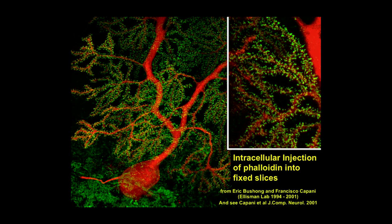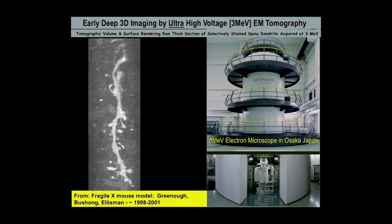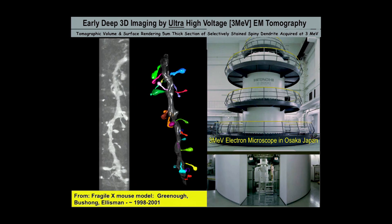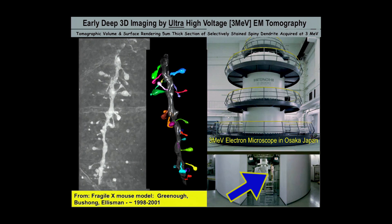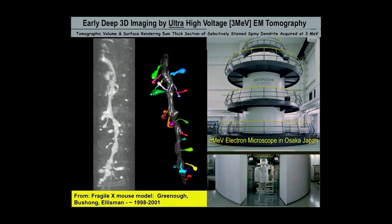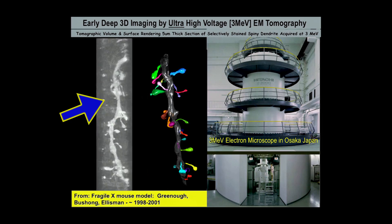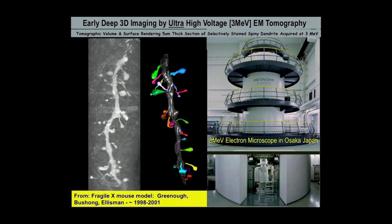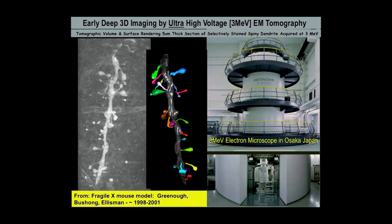These are all dendritic spines marked by actin in a confocal microscope. This is a Purkinje cell, also injected with a red dye just to see it. At that time, our tomography was best done with massive microscopes — here's a person for size reference — and we could punch through with very high energy electrons, three million volts, through samples as thick as 10 microns. This is from a Fragile X animal model, and you can see how tortured or variable the spines are — that's a hallmark of that disease in animal models and humans.